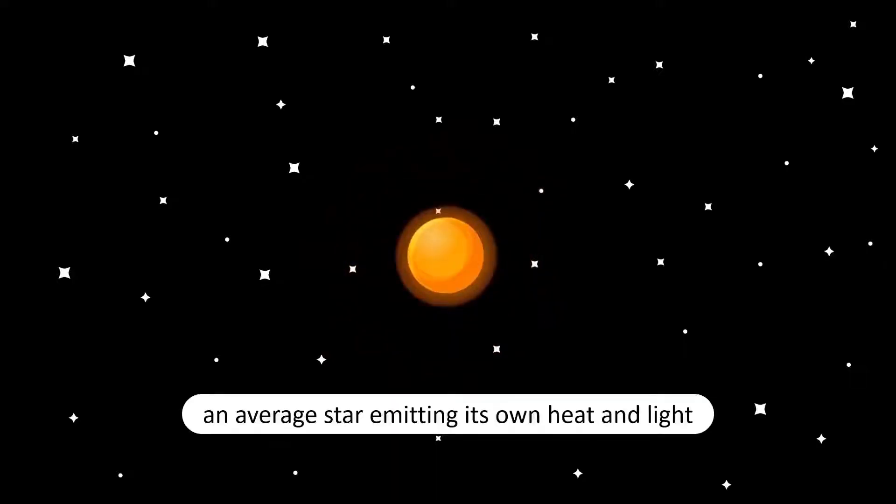For the next few million years or so, the protostar will grow denser and hotter until it reaches a stable state. At this point, a protostar becomes a star, emitting its own heat and light.